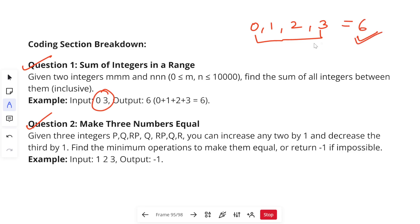Second question was based on make three numbers equal. You will be given three integers P, Q, and R, and you can increase any two by 1 and decrease the third by 1. Basically, let's see the input then you will understand. You have to basically find the minimum operations to make them equal or return minus 1 if not possible. So see, 1, 2, and 3 is there.